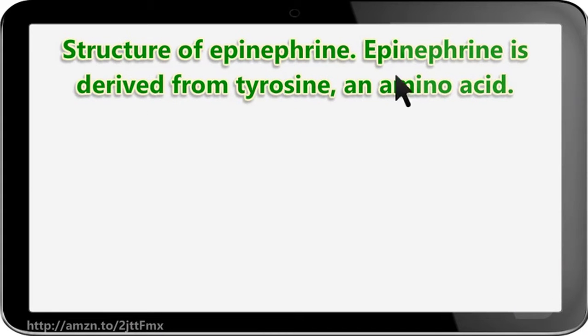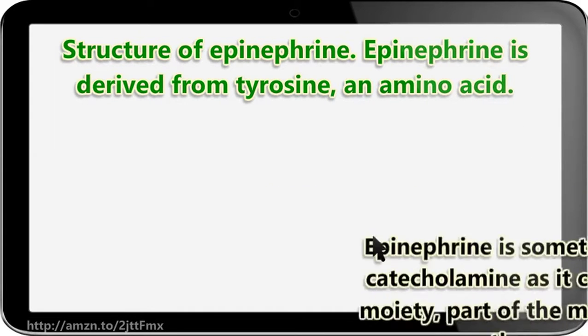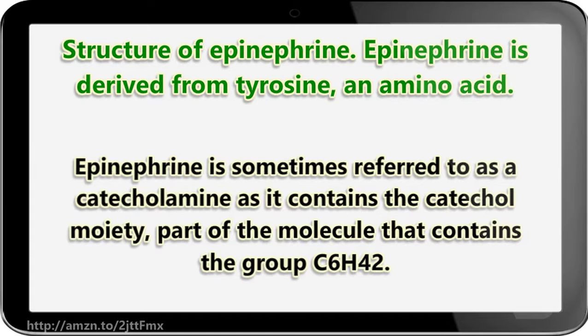Structure of epinephrine. Epinephrine is derived from tyrosine, an amino acid. Epinephrine is sometimes referred to as a catecholamine, as it contains the catechol moiety — part of the molecule that contains the group C6H4(OH)2.